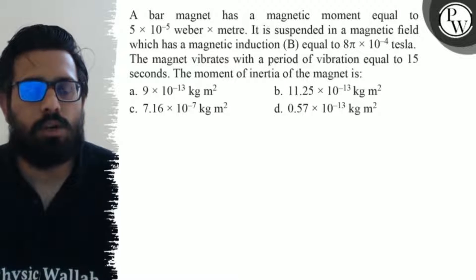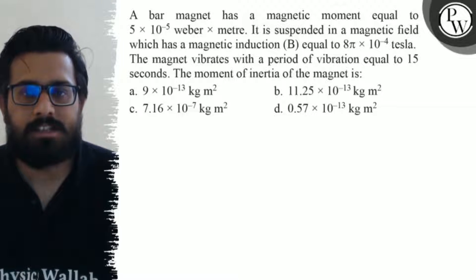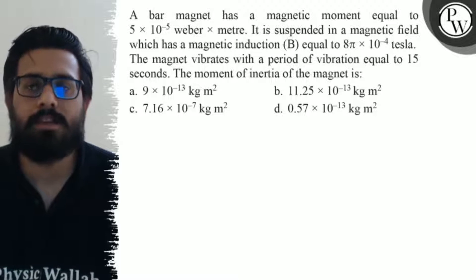A bar magnet has a magnetic moment equal to 5 × 10^-5 weber-meter. It is suspended in a magnetic field which has a magnetic induction equal to 8π × 10^-4 Tesla.